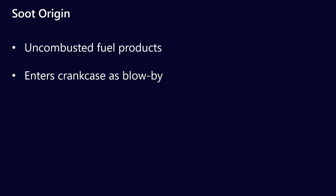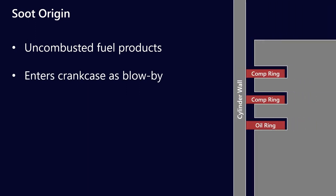If you can imagine soot, so soot is a really big deal when it comes to engines. Soot comes from uncombusted fuel products and it enters the crankcase as blow-by. We've got combustion above the top of the cylinder and we're going to get some blow-by gases that make it past the compression and oil rings, so that's how some of the uncombusted fuel might make it into the crankcase.